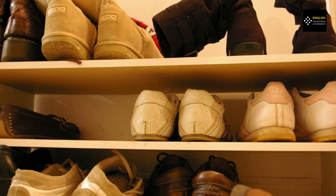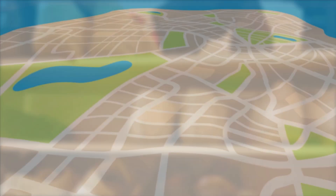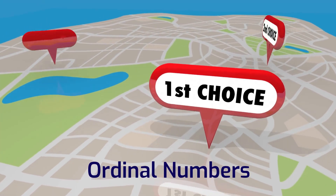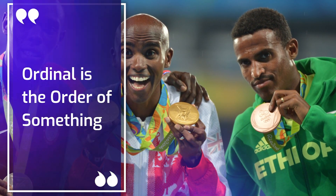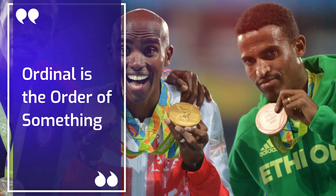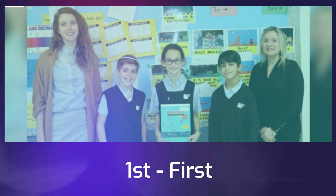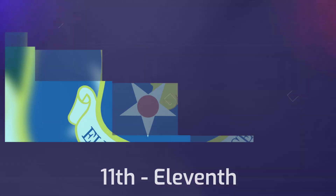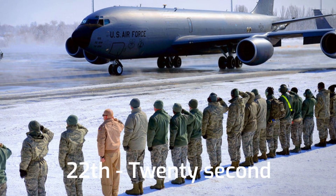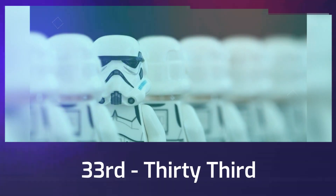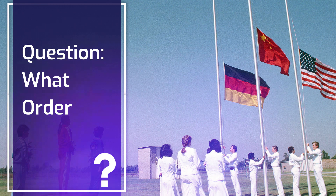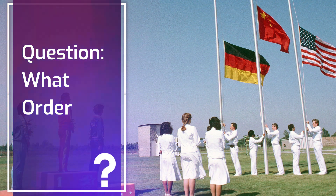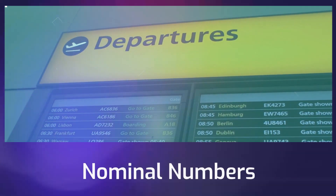How many pairs of shoes do you need? Meanwhile, the ordinal number is used to express the order of something. This is when we say first, second, third, eleventh, 22nd, 33rd, and so on. The question to ask here is: what is the order of something?